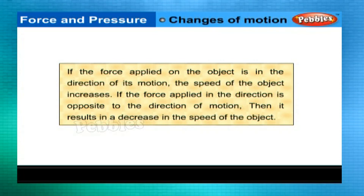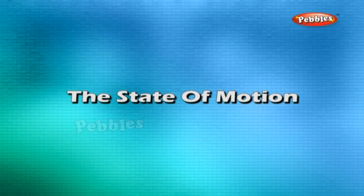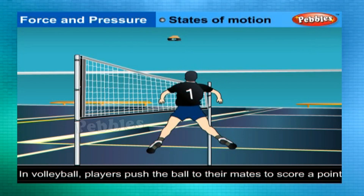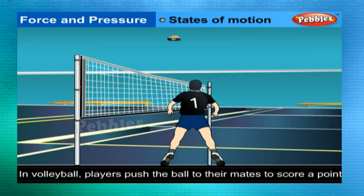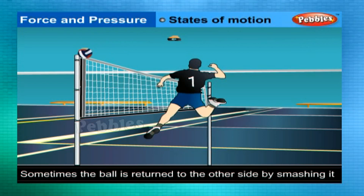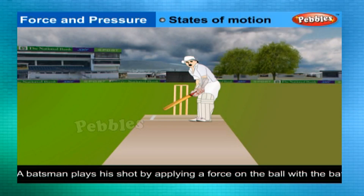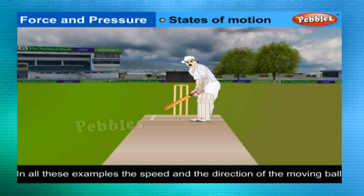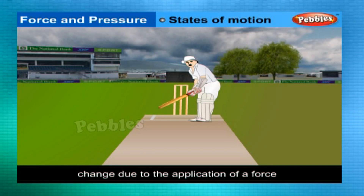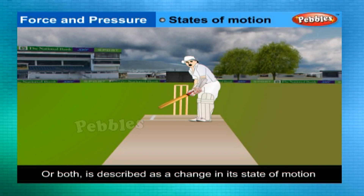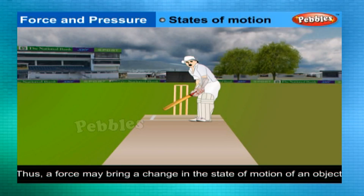The speed and the direction of a moving ball changes due to the application of a force. A change in either the speed of an object or its direction of motion or both is described as a change in its state of motion. Thus, a force may bring a change in the state of motion of an object.